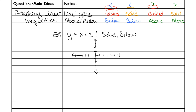Now you need to graph the line. Start by graphing your y-intercept at 2, since the equation is y ≤ x + 2. The slope is 1 — there's no number in front of x, which means it's really one — so you go up one, right one. Go in the opposite direction when you run out of room: down one, left one. Since it's a solid line, draw a straight line, then shade below that line, including everything below it on the y-axis.